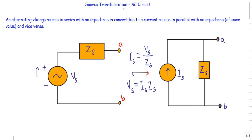So what is source transformation theorem? An alternating voltage source in series with an impedance is convertible to a current source in parallel with an impedance of the same value, and vice versa. If I have an alternating voltage source Vs in series with an impedance Zs, I can convert this voltage source to a current source Is in parallel with an impedance of the same value Zs.